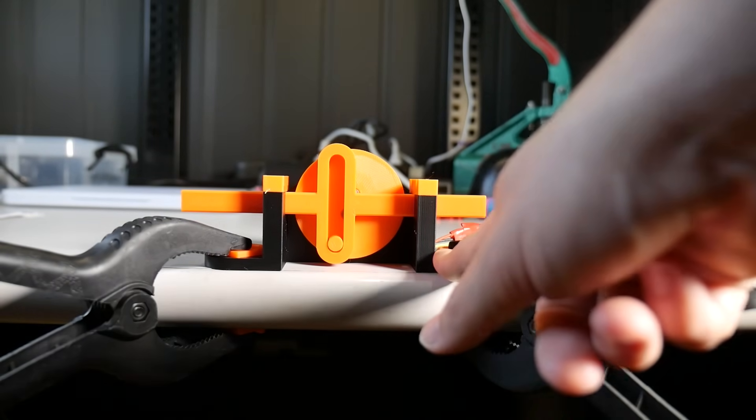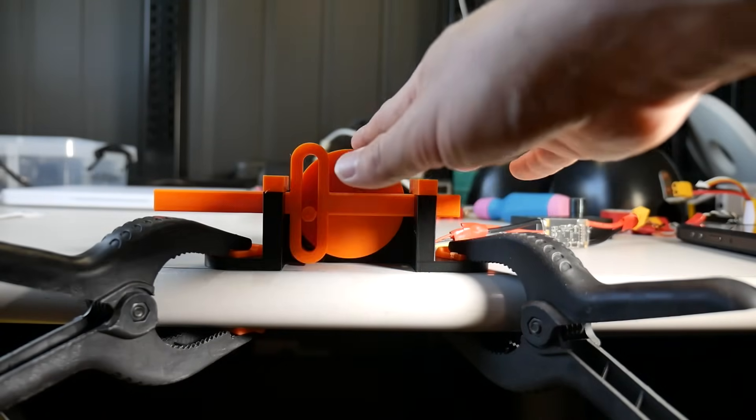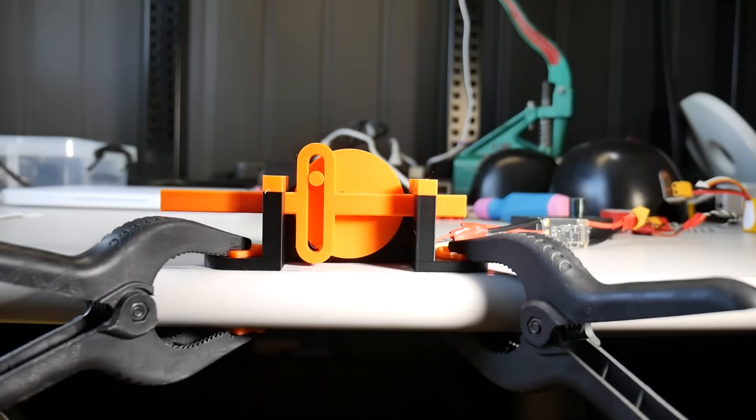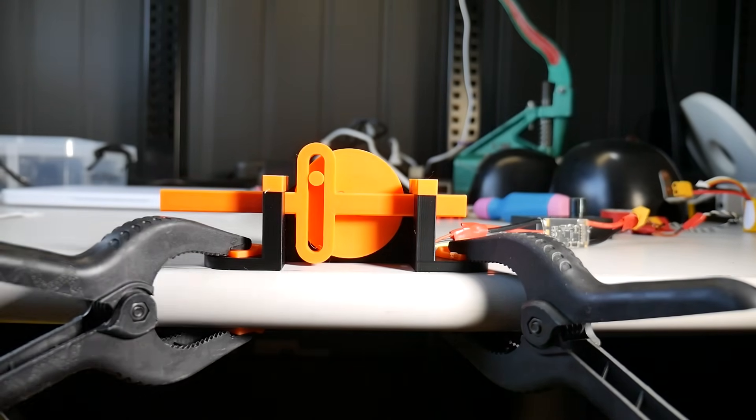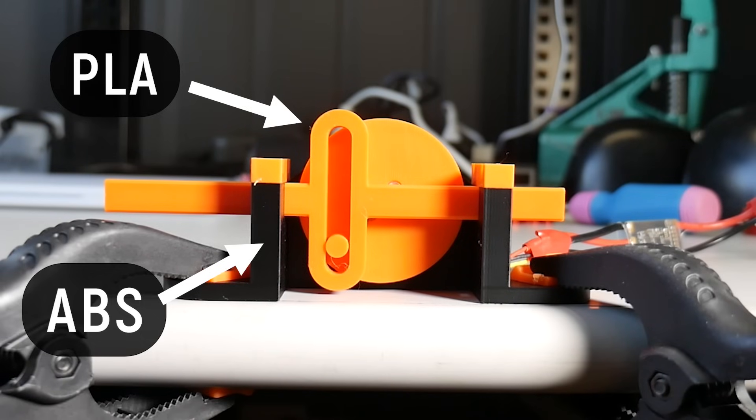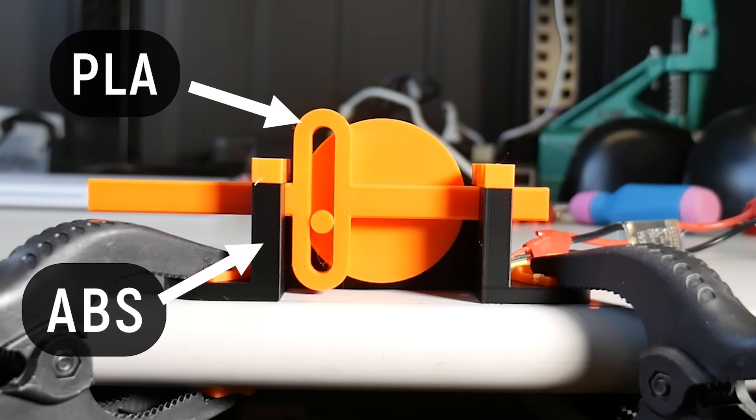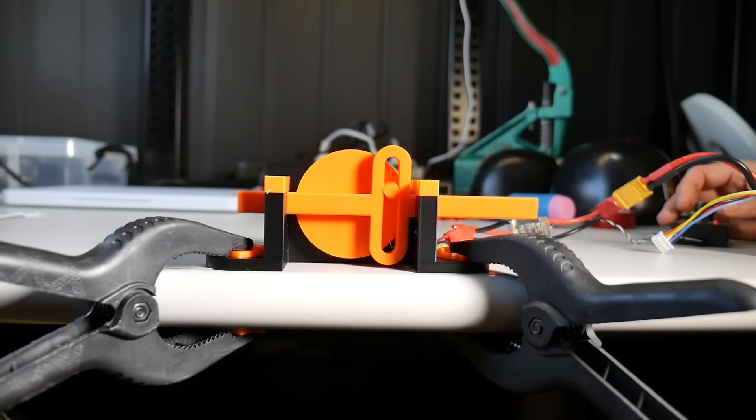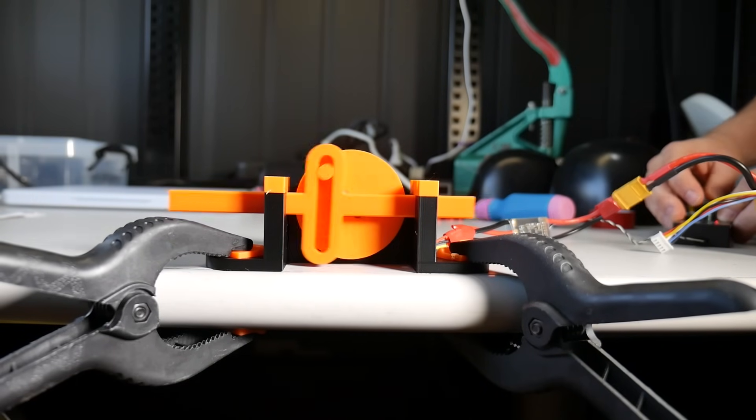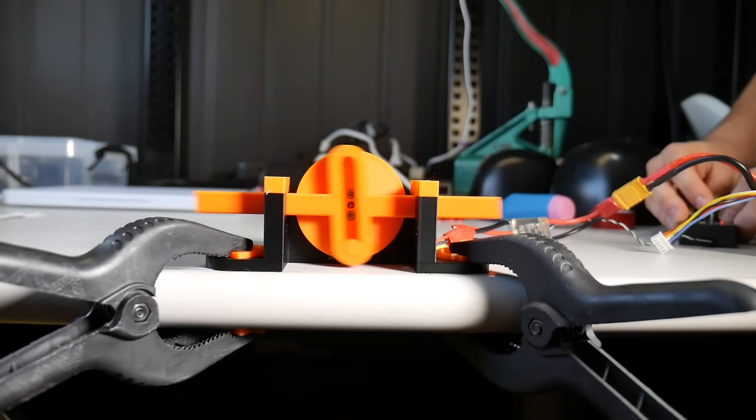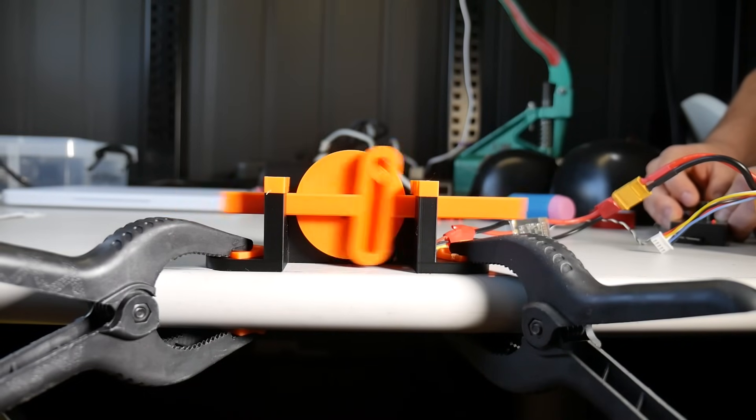The frame is made from ABS, and the Scotch yoke mechanism itself is made from PLA. And I've got thermal imaging camera here to see what heats up, so let's do this.